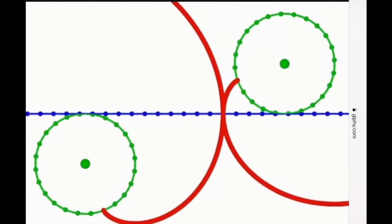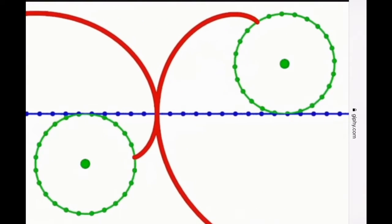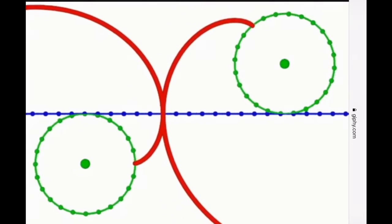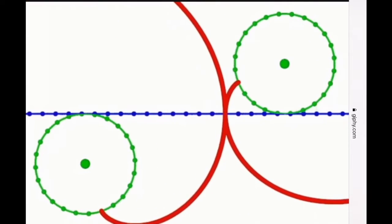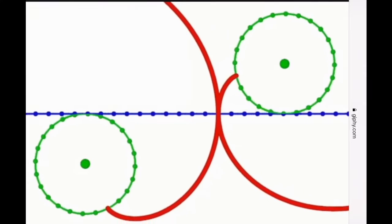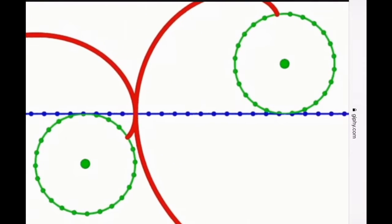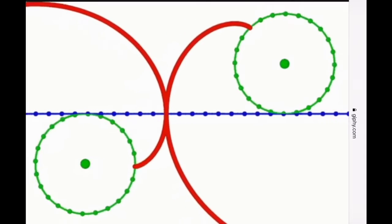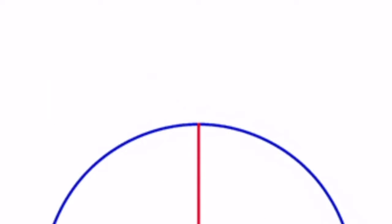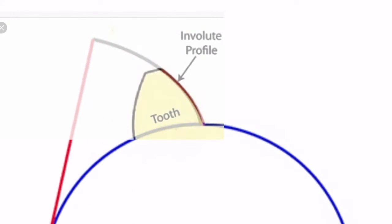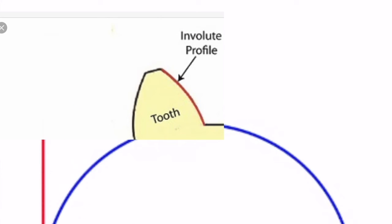But that never happens, because gears are almost never the same size. When these variables differ between the two gears, more and more sliding is introduced as they mesh together. The involute profile on gear teeth provides a very efficient transfer of motion. Virtually every gear profile on the planet uses this involute geometry.